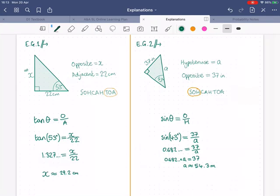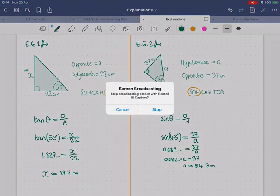Those are two examples. Next you'll need to know how to find a missing angle if you are given two sides, but it will be very similar to this process. So, let's get back to it. I'll see you next time.